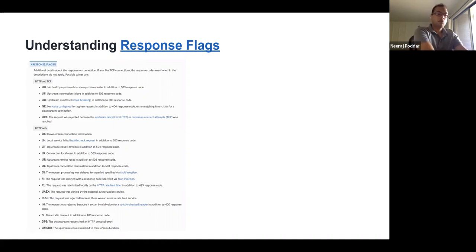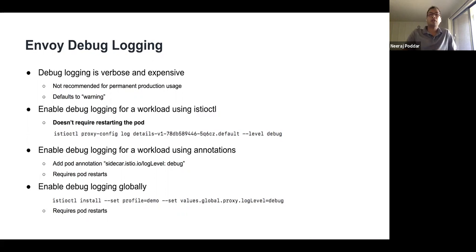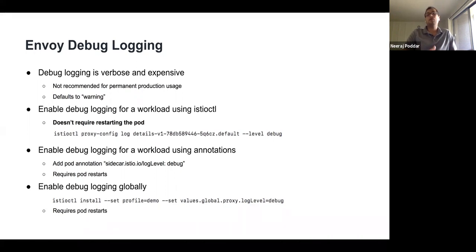Debug logging provides access to Envoy's internal logs to understand what's happening at a fine-grained level. It is very verbose and expensive, so it is not recommended for production — the default level is warning. The preferred way to enable debug logging for a specific workload without restarting it is using the istioctl command. This is specifically useful for mTLS-related issues where you may not even reach the access log stage but debug logs can provide more information.